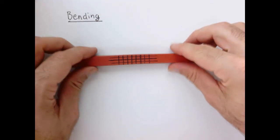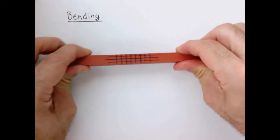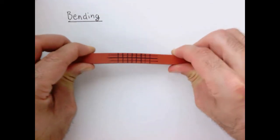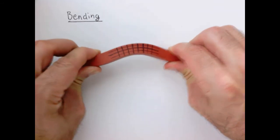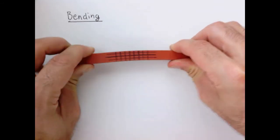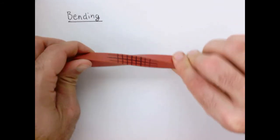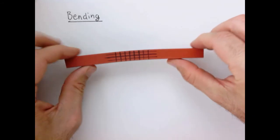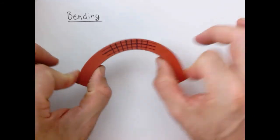So far we've talked about tension, pulling on something; compression, smushing something; torsion, twisting something. Now we're going to talk about bending.